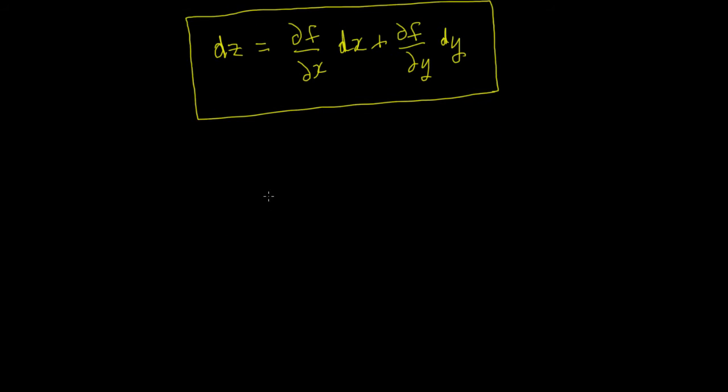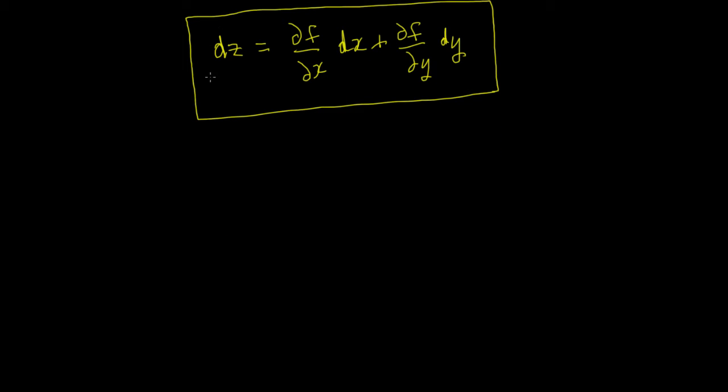Now, in this video, we're going to differentiate again, and we're going to find the second order total differential. So we're looking for D by DZ. Now we use the same process we did here, so we in effect iterate this process.